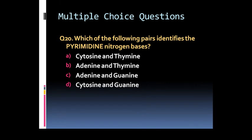Last question, question 20: Which of the following pairs identifies the pyrimidine nitrogen bases? Options are option A: cytosine and thymine. Option B: adenine and thymine. Option C: adenine and guanine. Or option D: cytosine and guanine.